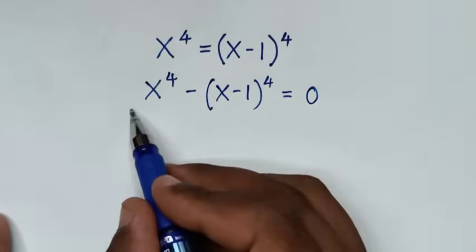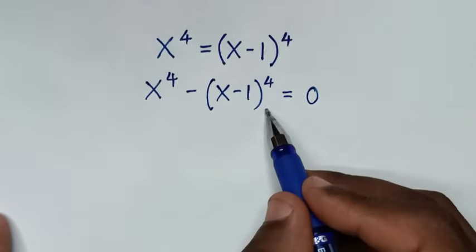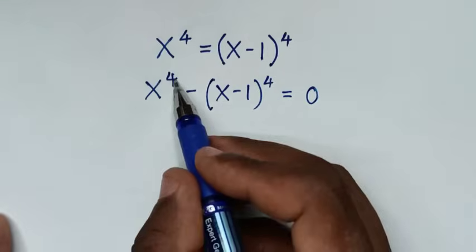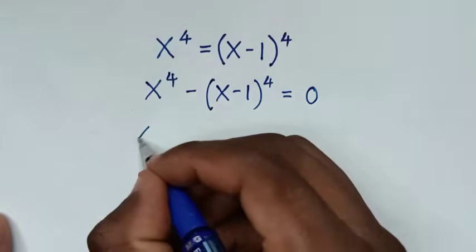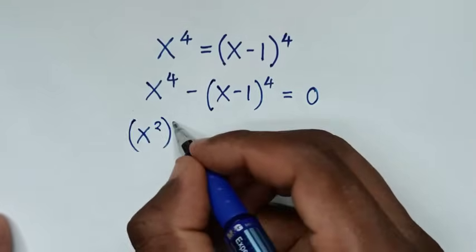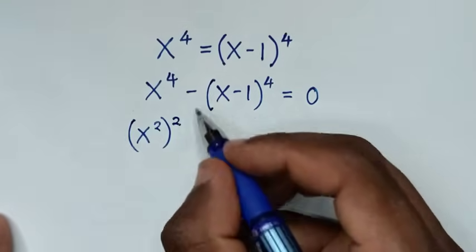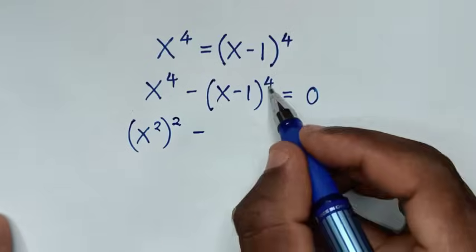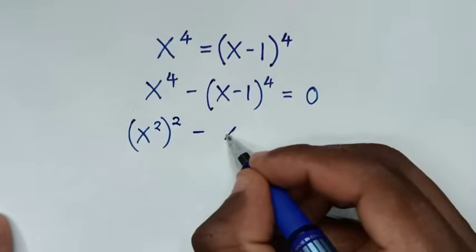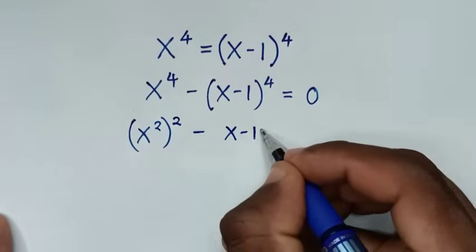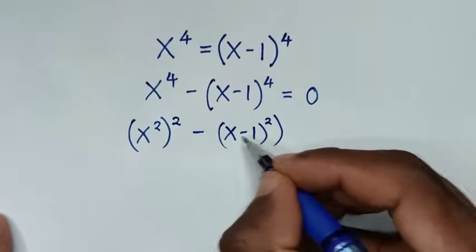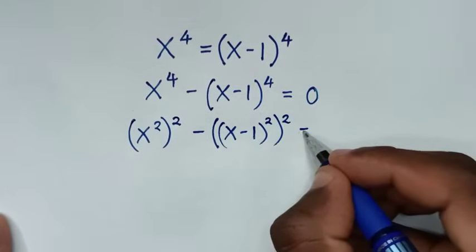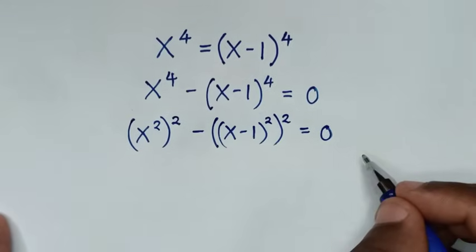From here, on the left side we rewrite in the form of a perfect square. So x power 4 is the same as x squared bracket power 2, and minus x minus 1 bracket power 4 is the same as x minus 1 bracket squared bracket power 2, equal to 0.